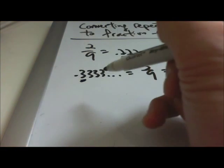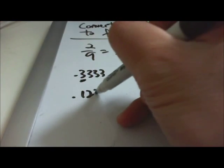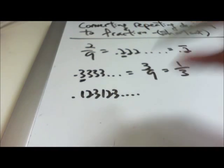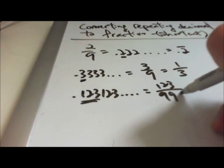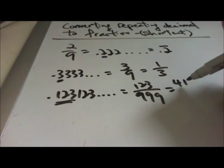How about 2 digits repeated? 0.123123 continuous. This is 123 over, because it's 3 digits, over 999, then you divide by 3 to get 41 over 333.